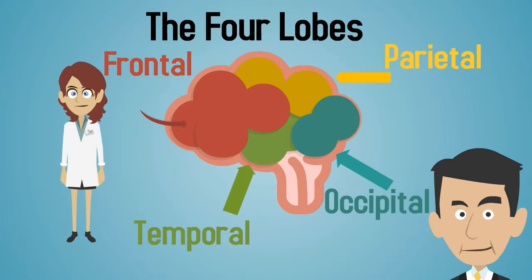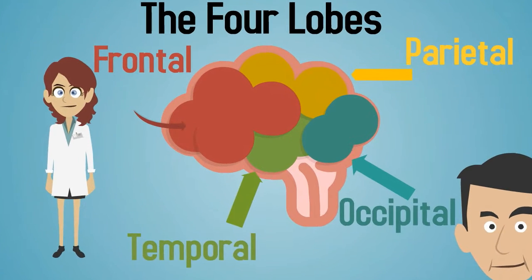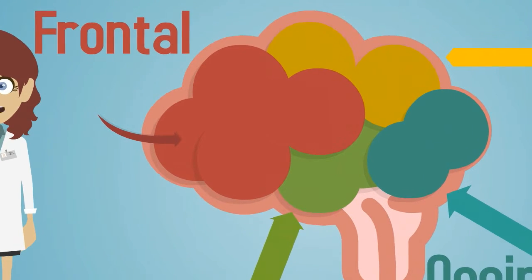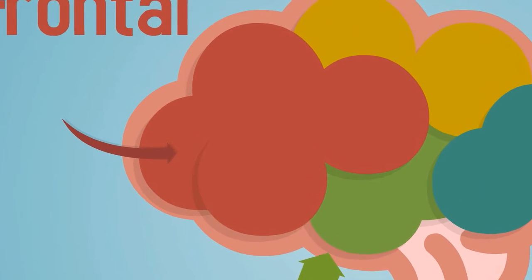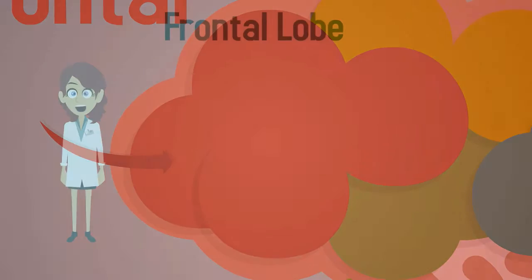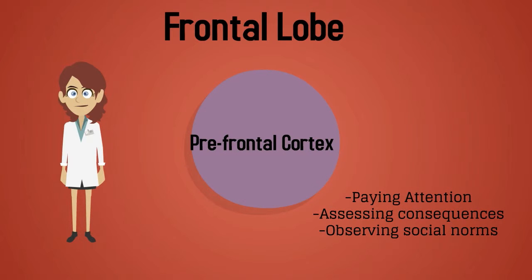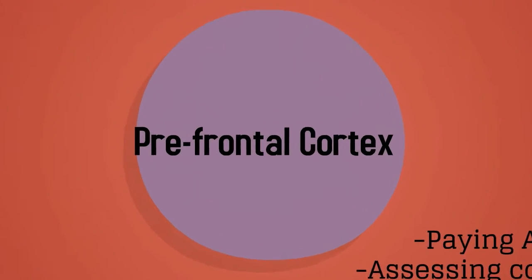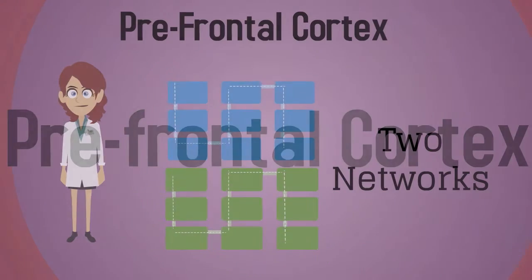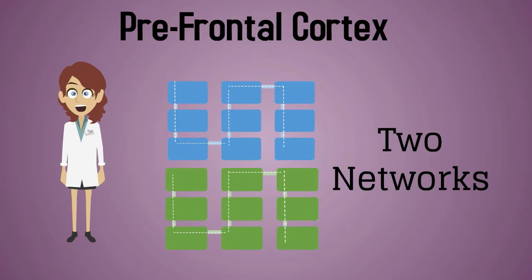While the parietal, occipital, and temporal lobes are needed for assessing information, the frontal lobe is the most important for decision-making. By delving deeper into the frontal lobe, we notice another important region involved in decision-making. This section is known as the prefrontal cortex. The prefrontal cortex is involved in several unique executive functions, such as paying attention, assessing consequences, and observing social norms. There are two different networks in the prefrontal cortex that are involved in assessing the information we perceive in order to ultimately reach a decision.